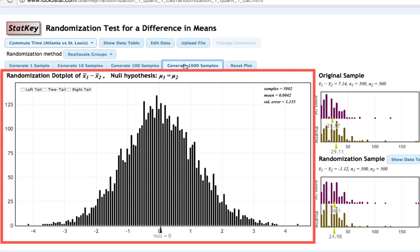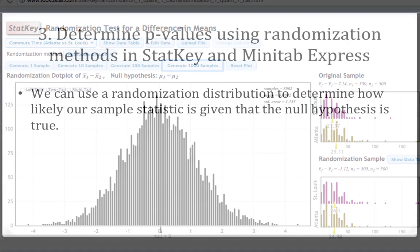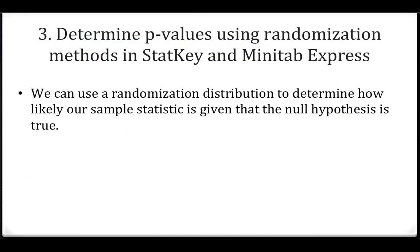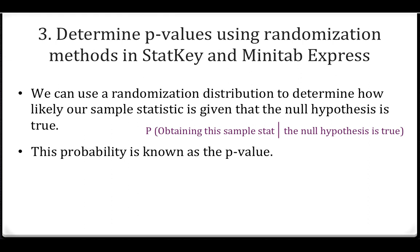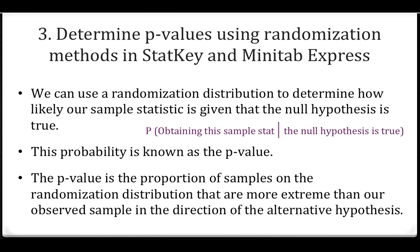Now let's go back to the slides and talk about how these distributions can be used to find the p-value. We can use a randomization distribution to determine how likely our sample statistic is given that the null hypothesis is true. This is often written as a conditional probability: the probability of obtaining this sample statistic given that the null hypothesis is true. This probability is known as the p-value. The p-value is the proportion of samples on the randomization distribution that are more extreme than our observed sample in the direction of the alternative hypothesis.